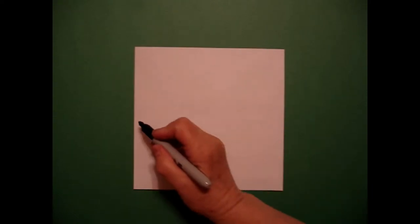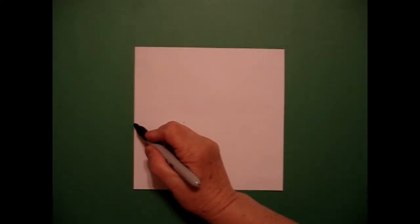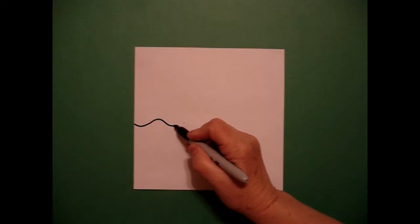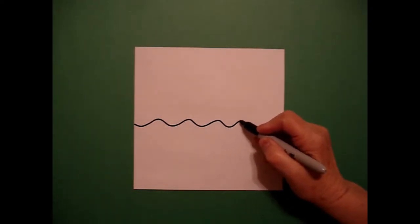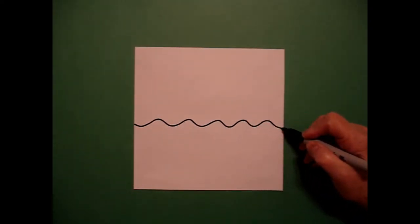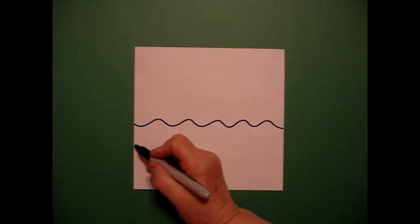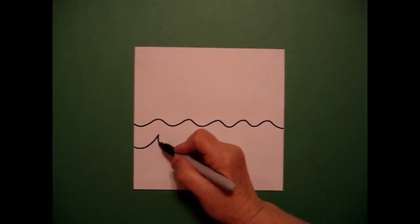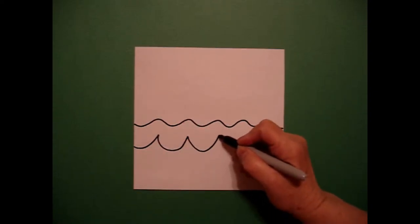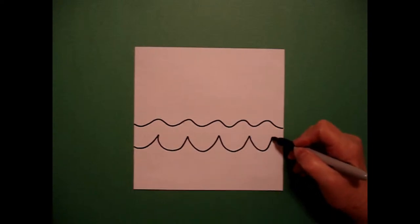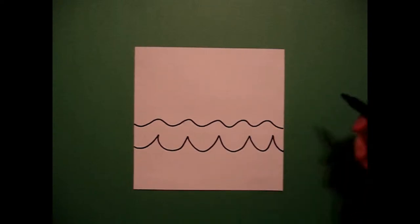Today's project is how to draw a hippo. I'm going to start right here about halfway on my paper and I'm going to draw a wavy, wavy, wavy, wavy line all the way across. I come back to the left and I'm going to draw a curved line up, up, up, all the way across.